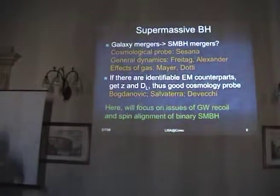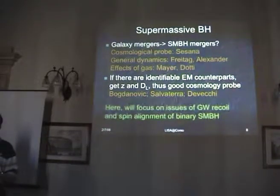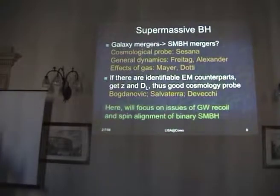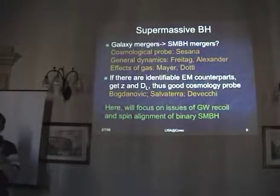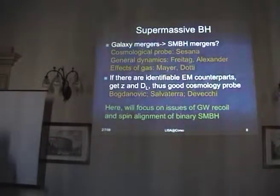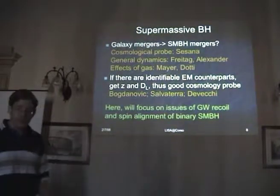What I'm going to focus on is a suggestion made by Tamara Bogdanovich, Chris Reynolds, and myself last year, having to do with when the supermassive black holes come together. If they're spinning, what is going to happen to their spins by the time they actually merge into one black hole? Is it going to be a random distribution? Is it going to be aligned? We argue that when you have a gas-rich merger, there will be an alignment, and this will have some important effects.